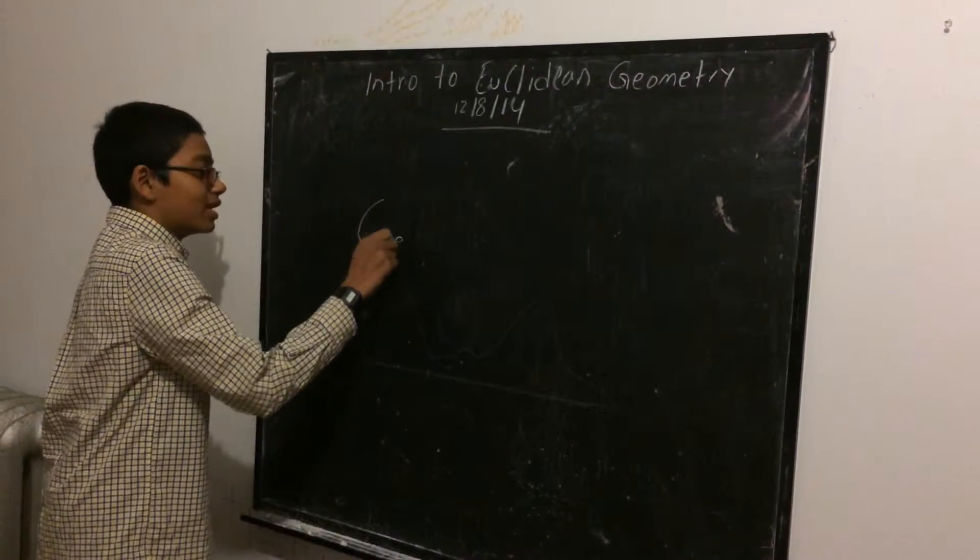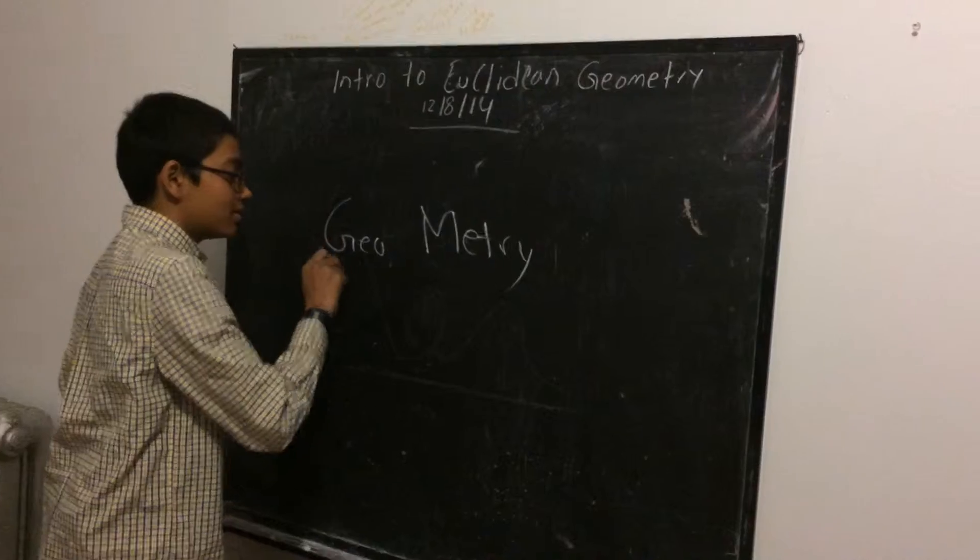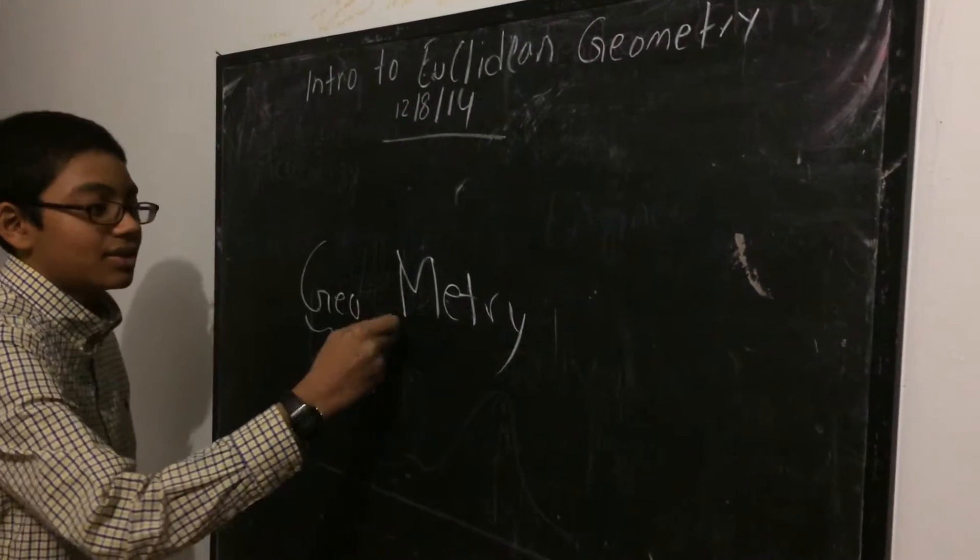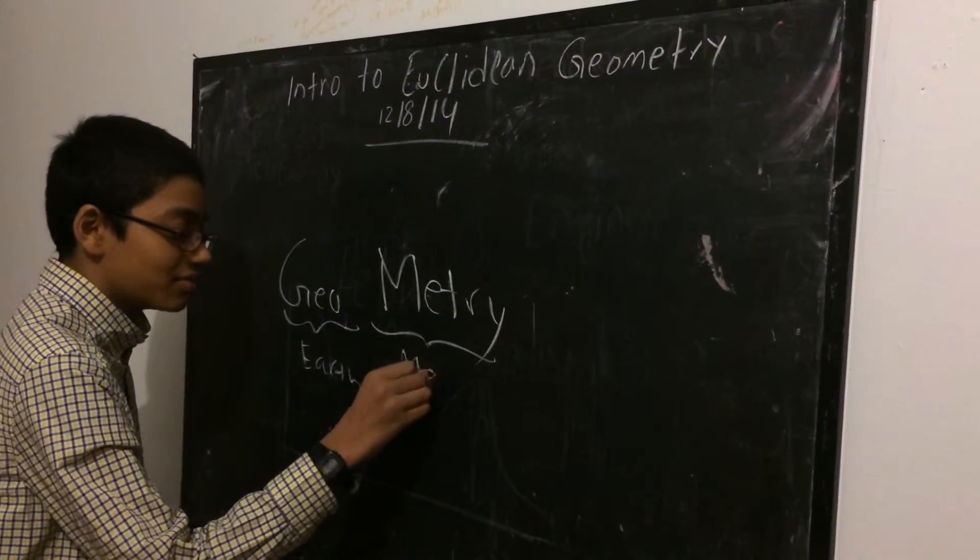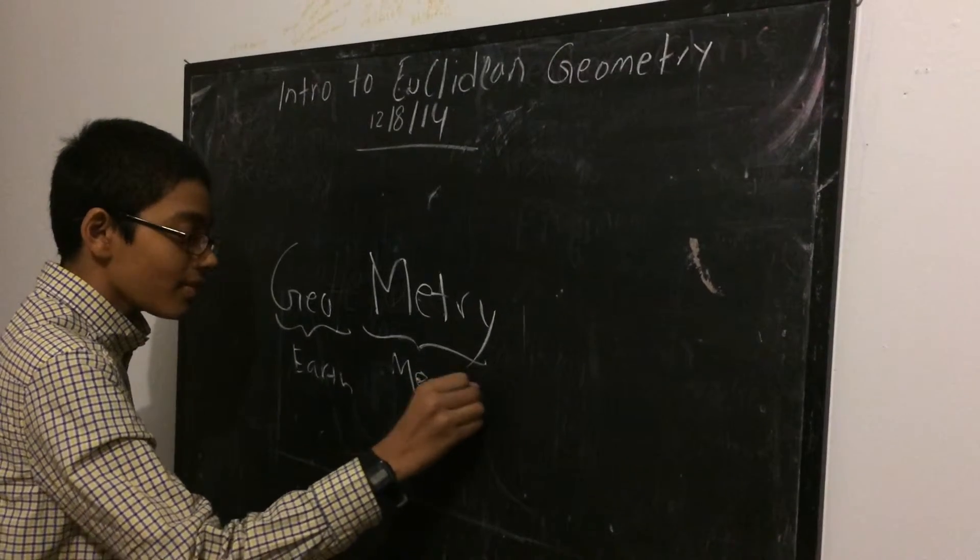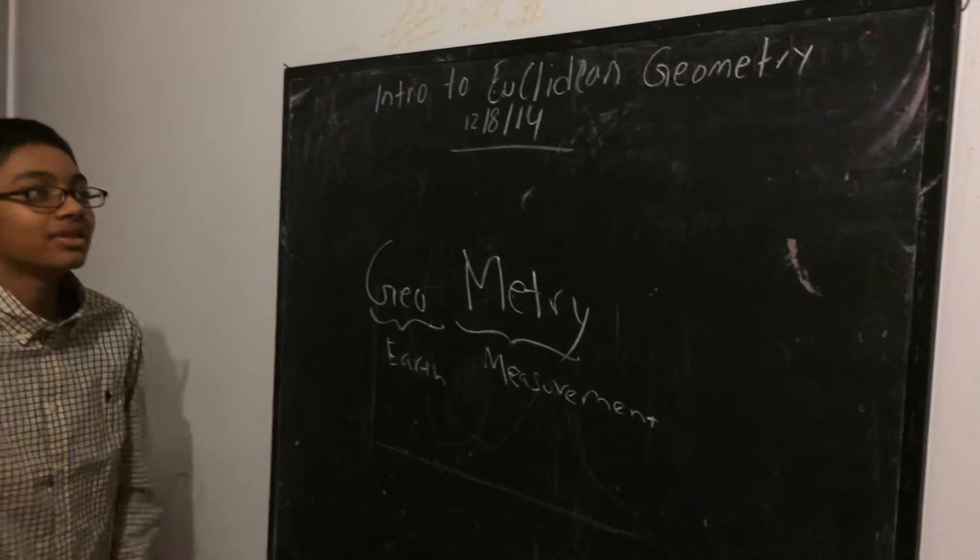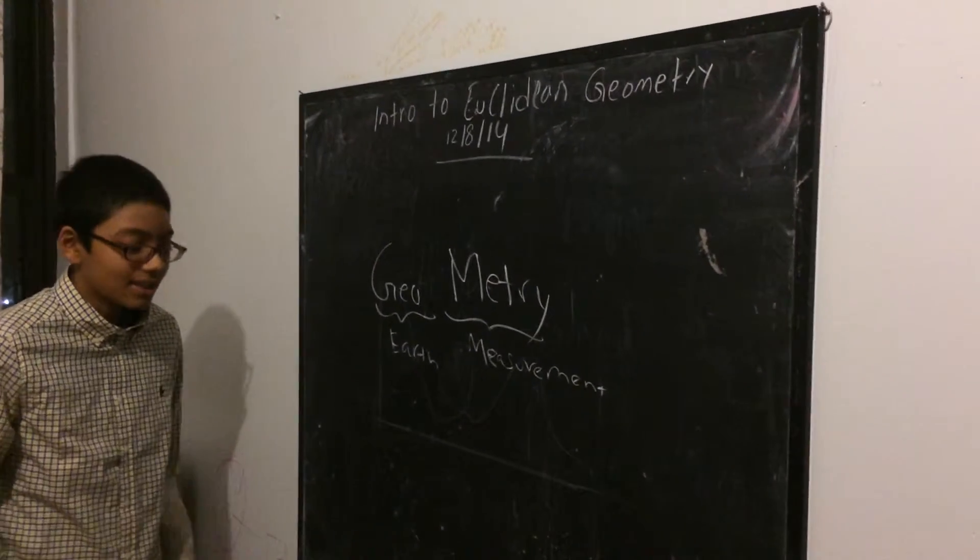Geometry is formed by two words. In Greek, geo means earth, and metric from trigonometry, or the metric system, means measurement. So geometry basically means earth measurement, and in the broadest terms, that's basically what geometry is. I mean, you're measuring angles and that kind of stuff.